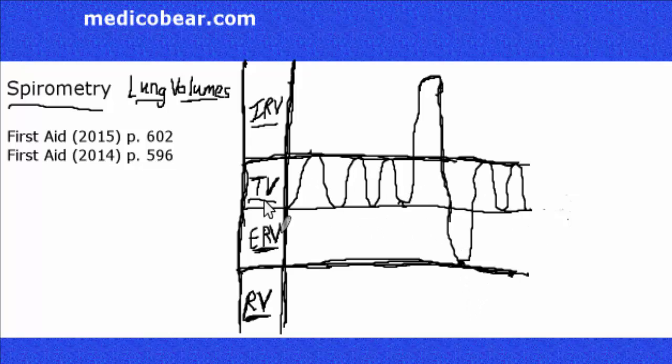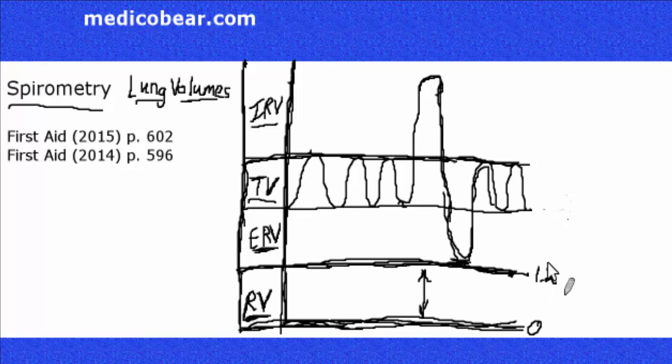So this diagram here, this is something that the student just has to know cold, has to have it memorized and you have to know it backwards and forwards. Inspiratory reserve volume, tidal volume, expiratory reserve volume, and residual volume. This is going to be labeled as 0, 1.2, 2.2, and 2.7. This should be 6.0. This is all liters.